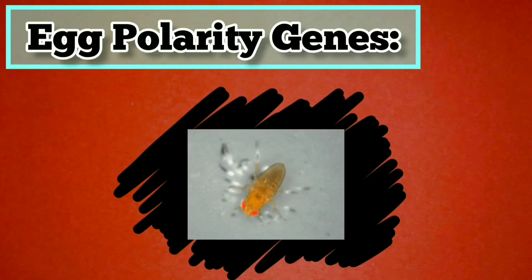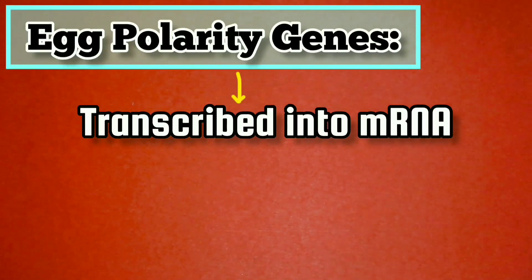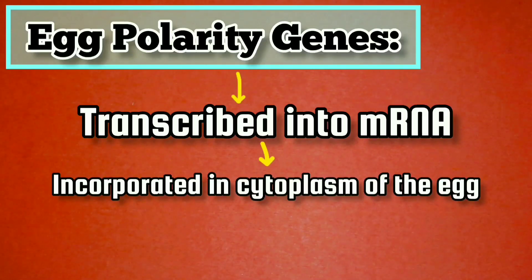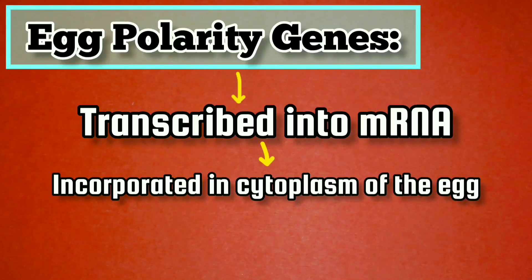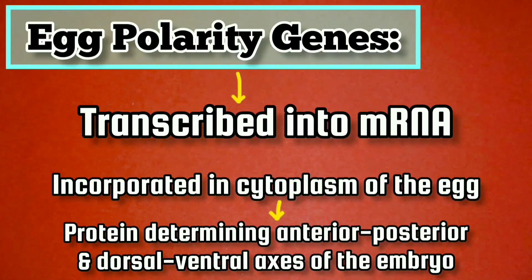Today we will learn about egg polarity genes, which play a crucial role in establishing the two main axes of development in fruit flies. The egg polarity genes are transcribed into mRNAs during egg formation in the maternal parent, and these mRNAs become incorporated into the cytoplasm of the egg. After fertilization, the mRNAs are translated into proteins that play an important role in determining the anterior-posterior and dorsal-ventral axes of the embryo.